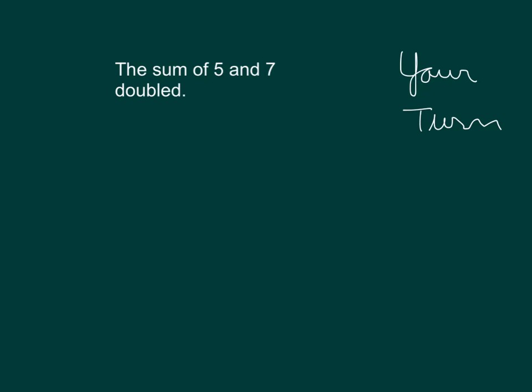Okay, it's your turn. The sum of 5 and 7 doubled. Write the expression and evaluate it. Did you write 2 times 5 plus 7? Evaluating it, you should get 24. Compare the screen against your work.